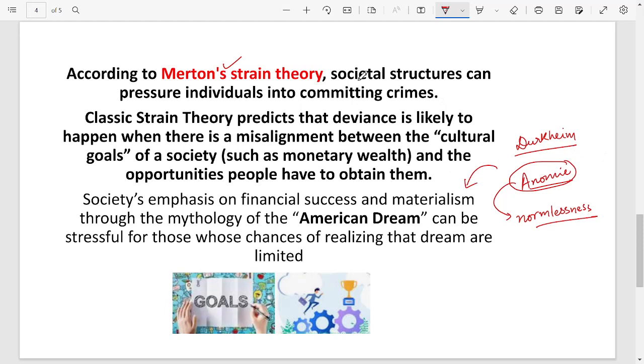First of all, let us understand very basically what is strain theory. Strain means simply pressure. Whenever we face pressure in life, that is when we end up doing or committing crimes or mistakes. If you have everything in your life, then you will not be committing crimes. This is the logic that Robert King Merton had used, which of course was criticized much later saying that even rich people commit crimes.